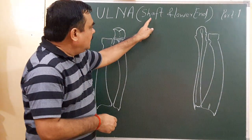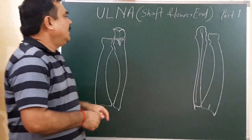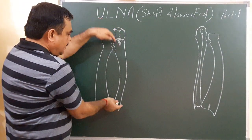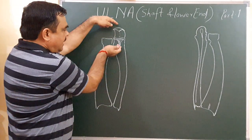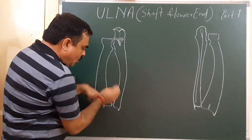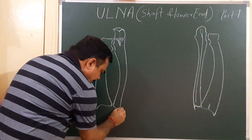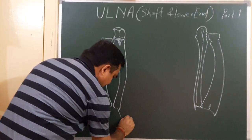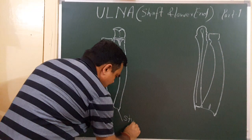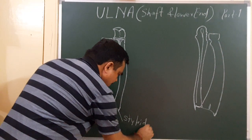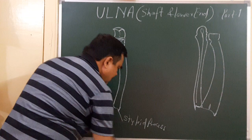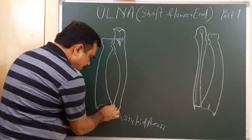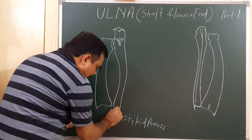Now we'll discuss the lower end and shaft of the ulna. This is the ulna — it has a lower end, this part is the shaft, and this is the upper end. First we'll discuss the lower end. It has a process here — posteriorly and medially — this process is the styloid process, and here is the articular surface.